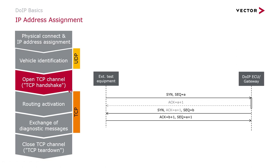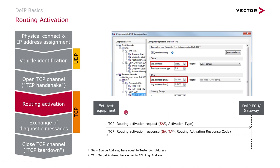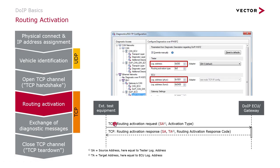For the further steps it is necessary to use the TCP transport protocol. This means the tester needs to open the TCP channel in a so-called TCP handshake. Once this is done, the next step is the routing activation request. The routing activation request is sent by the tester to the ECU, and the ECU responds if the routing was successful. The routing activation is necessary to activate the communication with ECUs behind the gateway, or the gateway itself. To ensure this is working correctly, it is necessary to set the logical address of both the tester and the ECU.